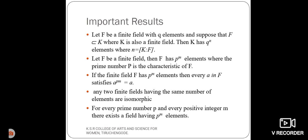Next, if the finite field F has Pᵐ elements, then every element a belongs to the field F satisfies aᴾᵐ which is equal to a. Any two finite fields having the same number of elements are isomorphic. For every prime number P and every positive integer M, there exists a field having Pᵐ elements.